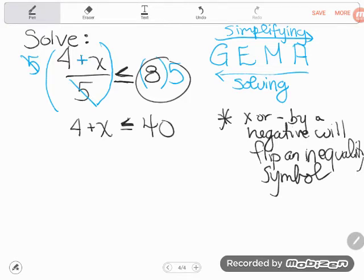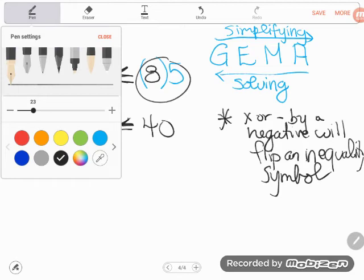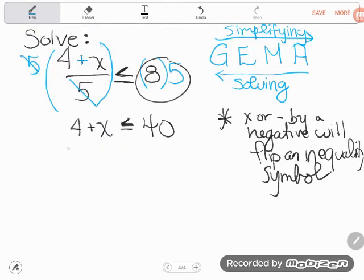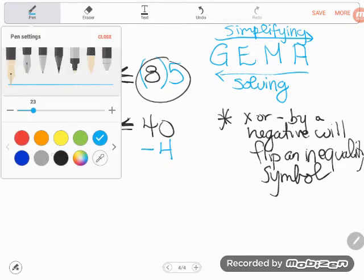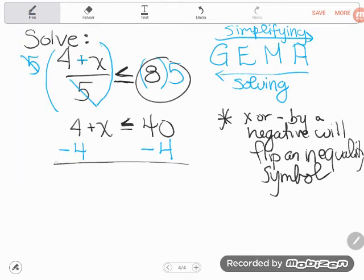Cool. Now x is really almost alone. All I have to get rid of is the four. Again, you want this four to go away, so I'll subtract it away. It's adding with x, so I can do that. And I make sure that I keep my balance by doing the same thing on both sides.